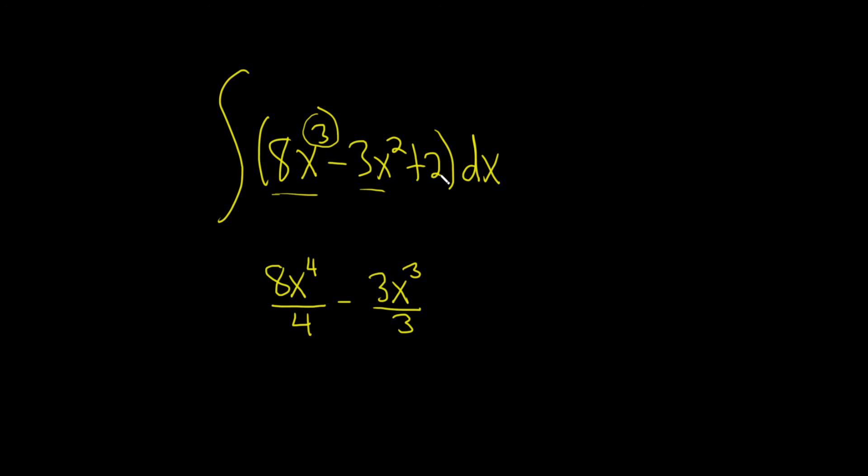Then we have a 2, and whenever you have a number by itself, you put an x next to it like this: 2x. And don't forget the capital C. This is our constant of integration.